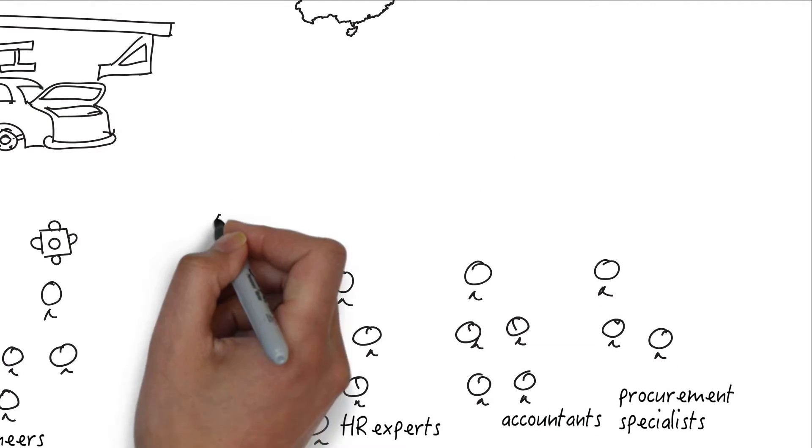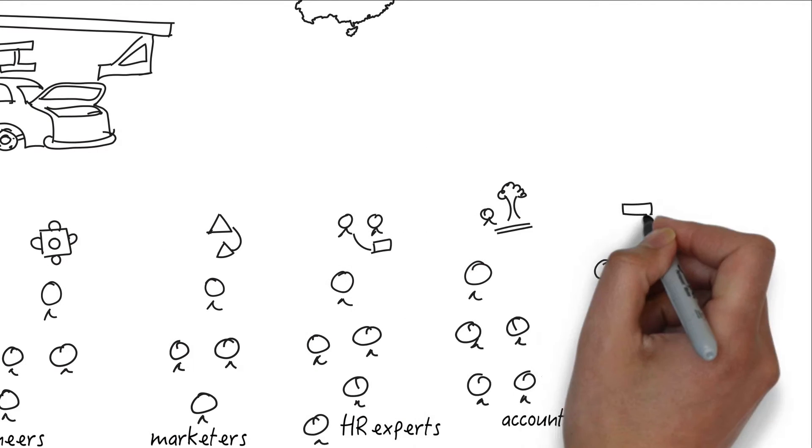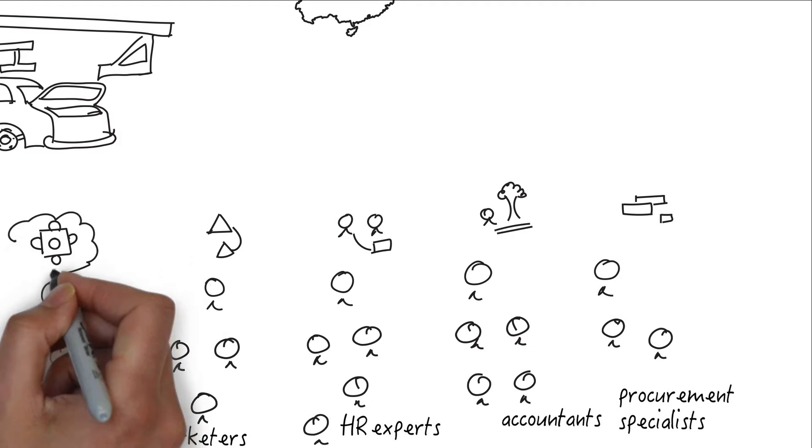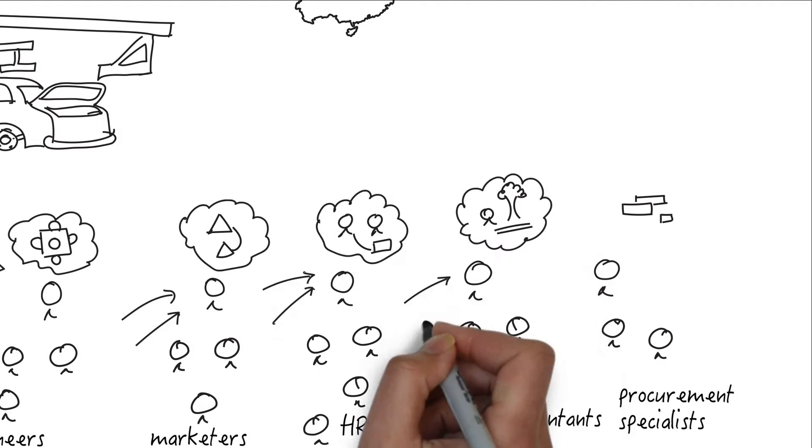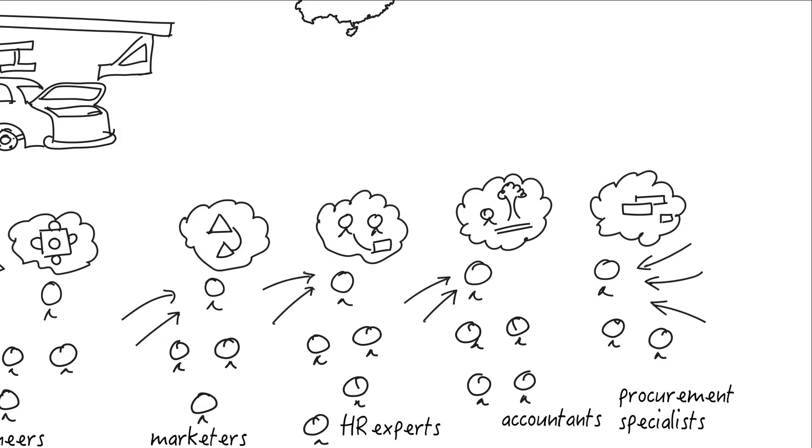Each executive consumes different pieces of information to understand the problem and essentially builds a mental model in his or her head that's then used as a basis for the decision. If this mental model is wrong, then the decision is potentially disastrous. Moreover, the mental model that each executive creates may be different from the mental models that other executives create in their respective heads. If they all look different, then what are the chances that the decision is optimal?